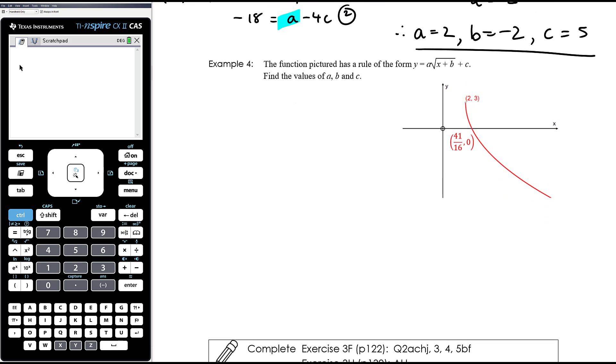Example 4. The function pictured has a rule of this form. Find the values of a, b, and c. So this is the most useful bit here because that's about the translations. The square root graph, it's clearly been reflected in the x-axis, so it's expecting a to be something negative, but we'll work that out later. But it's clearly gone to the right by 2 and up by 3 in order to have its end point at (2, 3). So therefore, our equation is going to be a times the square root of (x minus 2) plus 3. And then we just need to use this point to find the value of a.